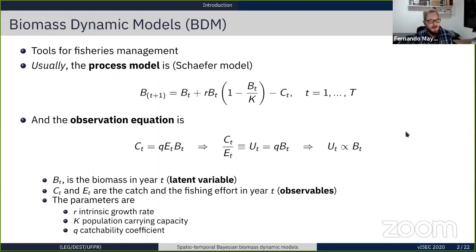The process model represents the way a population evolves over time and here it is usually represented as a modified logistic growth model. This is called the Schaefer model and it depends on two parameters: r, the intrinsic population growth rate, and K, the population carrying capacity.